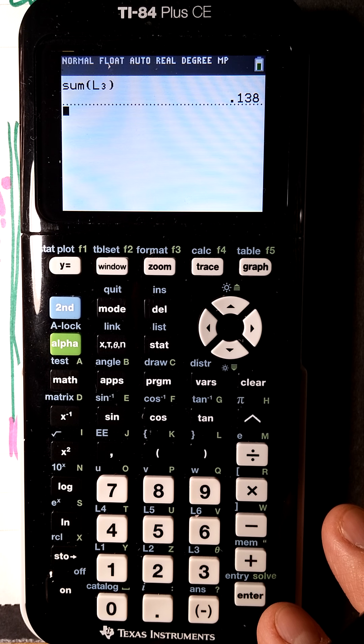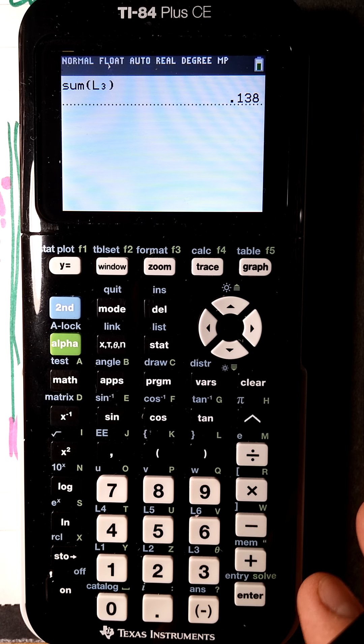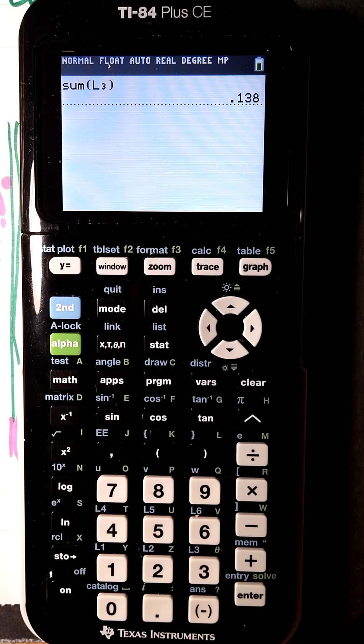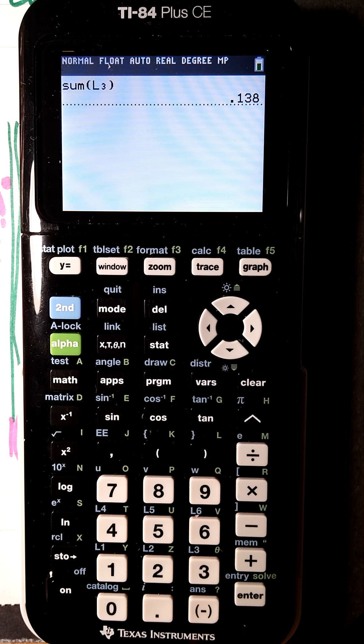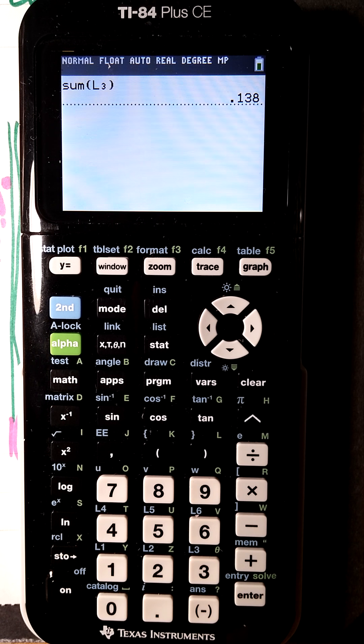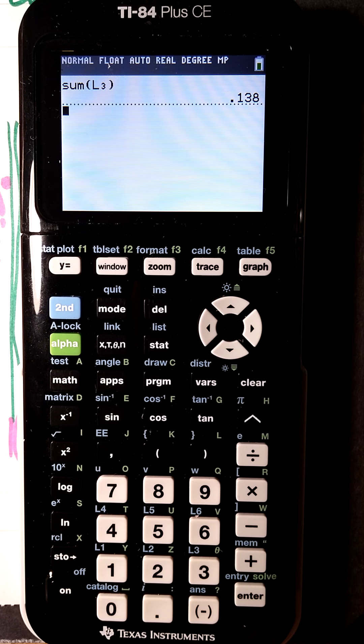When you add that up you get 0.138, so the expected value is 0.138. This is for fail, right? In other words, there'd be a 13.8 percent chance of failing, and maybe just maybe that was too much for the Challenger shuttle and they should have waited until it warmed up.